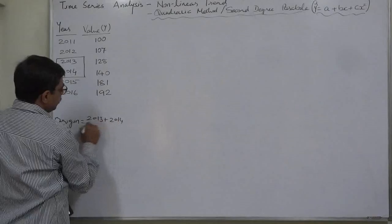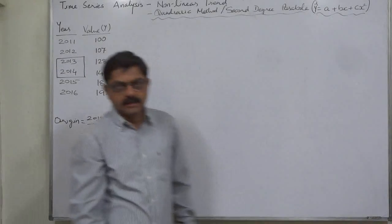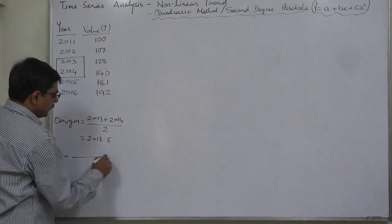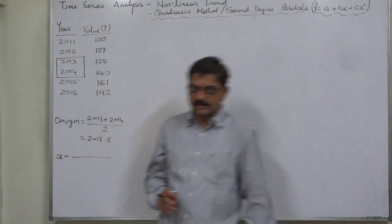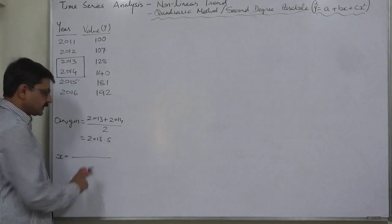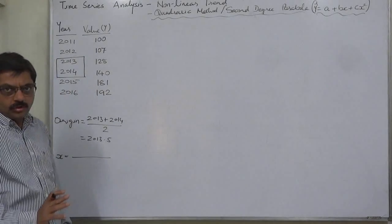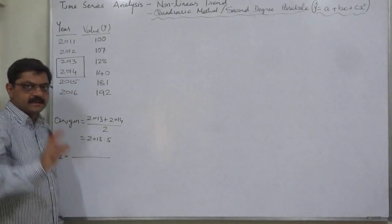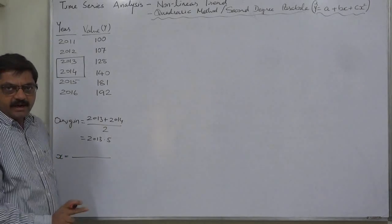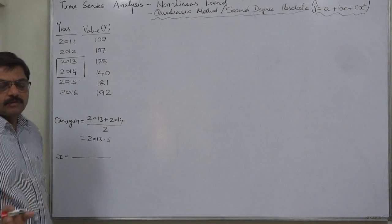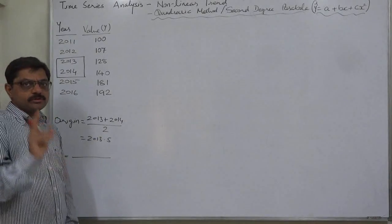The origin will be the mean of 2013 and 2014, which is 2013.5. To determine X, we have two choices. In many Indian and Asian reference books on statistics, the difference between the year and the origin is divided by half of the interval. Many authors, including myself, don't prefer this approach, but since it is explained in most reference books in the Indian subcontinent, I am following that pattern.